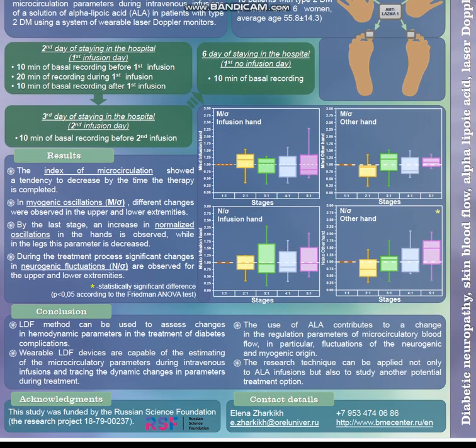As a result, the index of microcirculation showed a tendency to decrease by the time the therapy is completed. In neurogenic oscillations, different changes were observed in the upper and lower extremities.